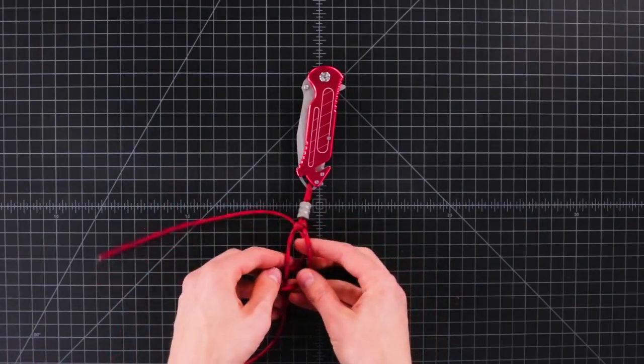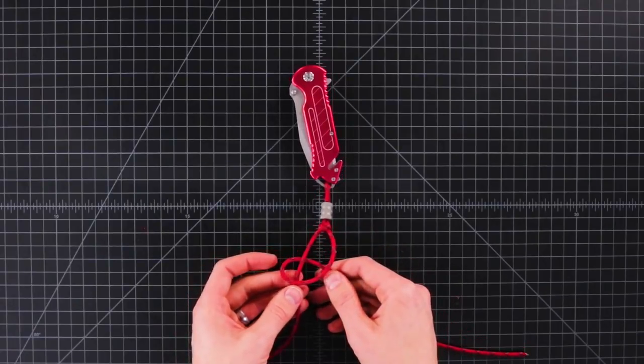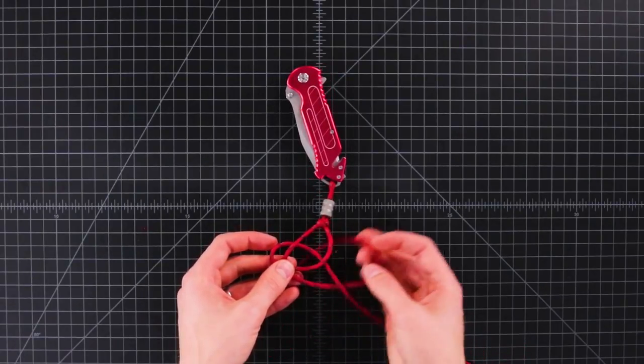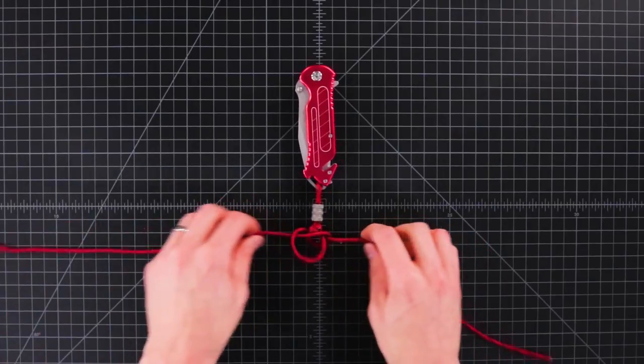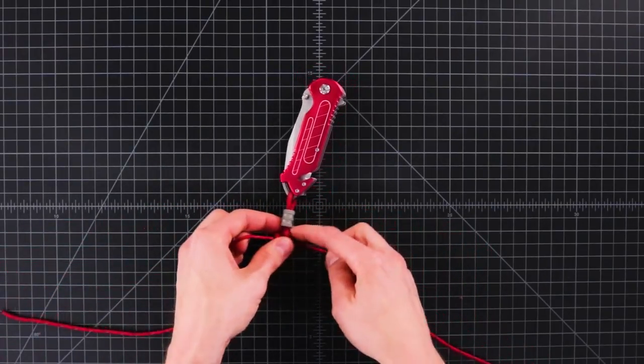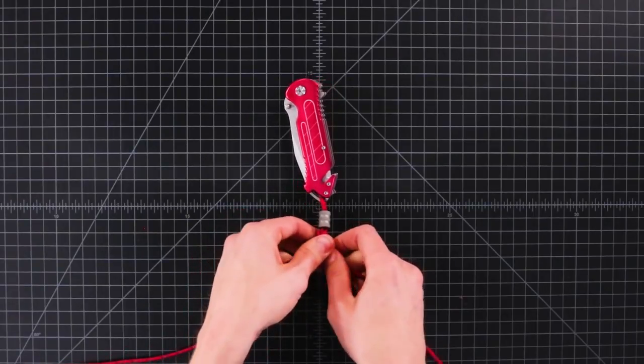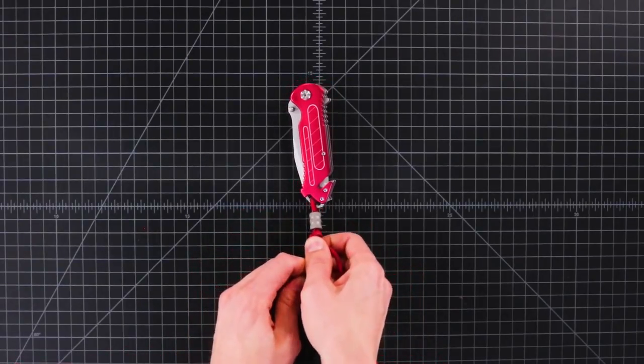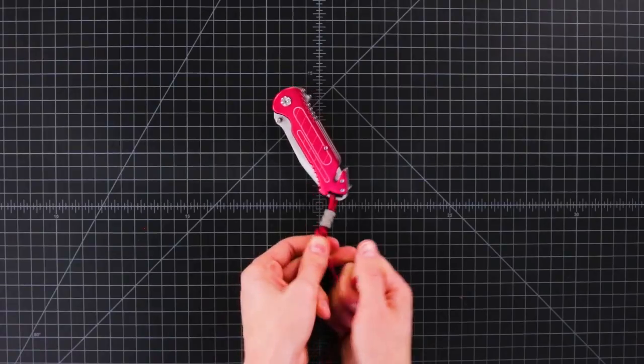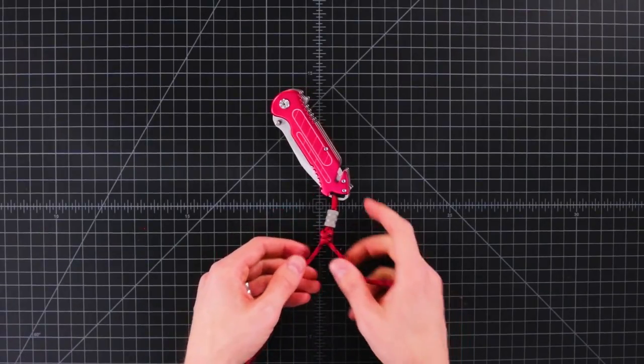So again, this loop around the back like that. The other one around the back and through the loop. Now we can really tighten it down. You kind of want to push up towards your second knot, otherwise there will be a space in between them.